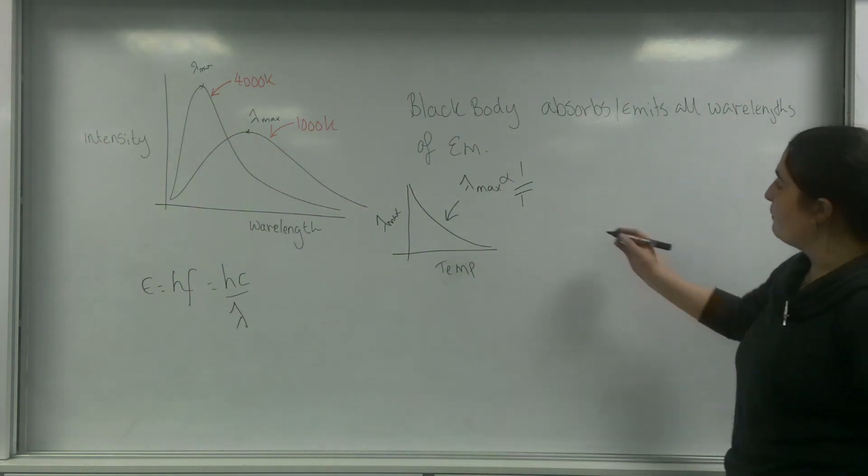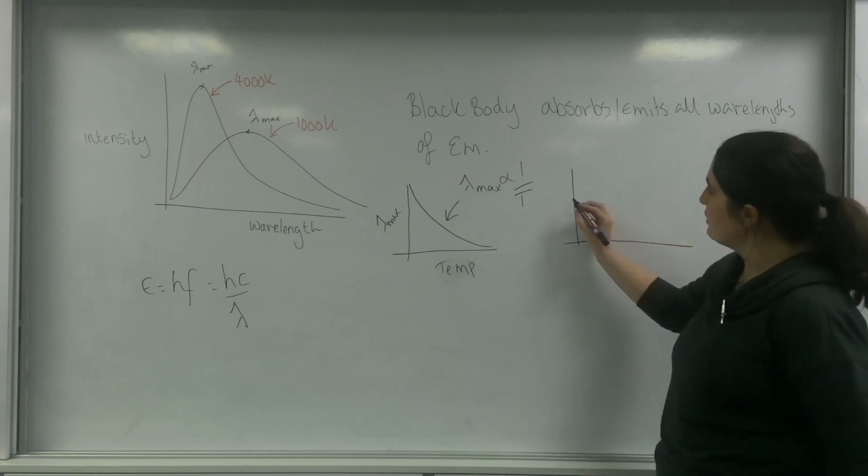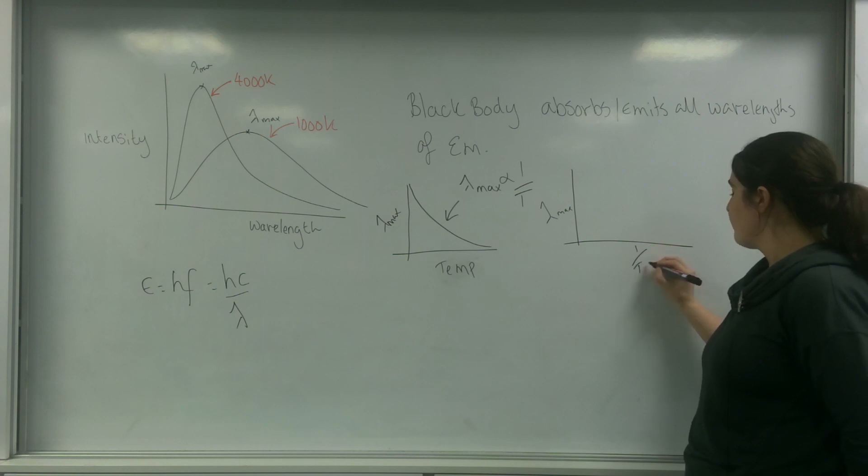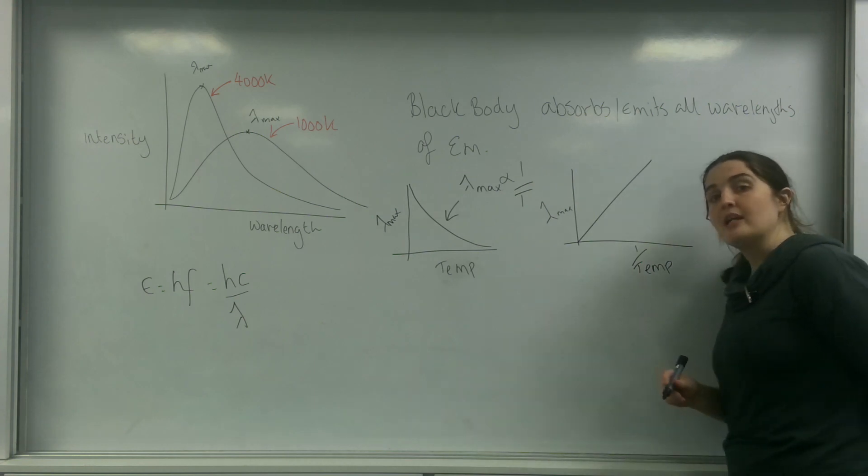So what then happened was Wien took this a bit further and he plotted lambda max versus 1 over the temperature and produced a graph like this, which is a straight line graph.